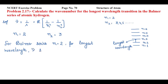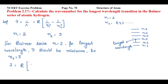The wave number (nu bar) will be minimum when the transition starts from orbit 2 and ends on orbit 3. So n2 will be 3. Our formula is: nu bar = R × (1/n1² − 1/n2²), where R is Rydberg's constant.